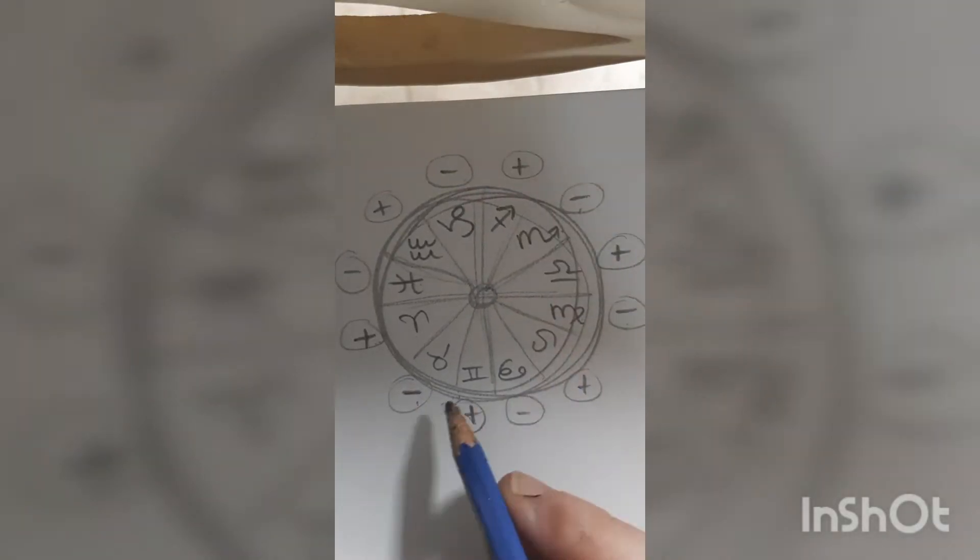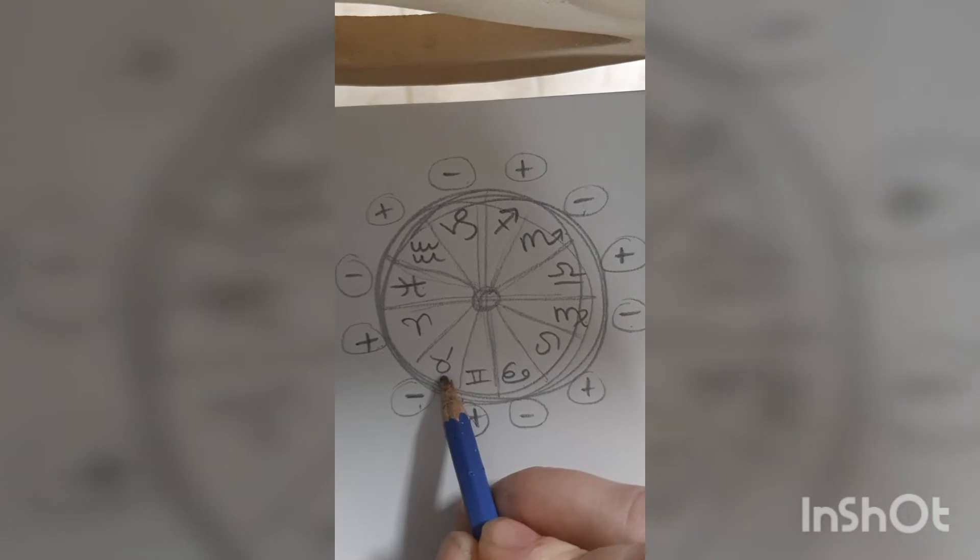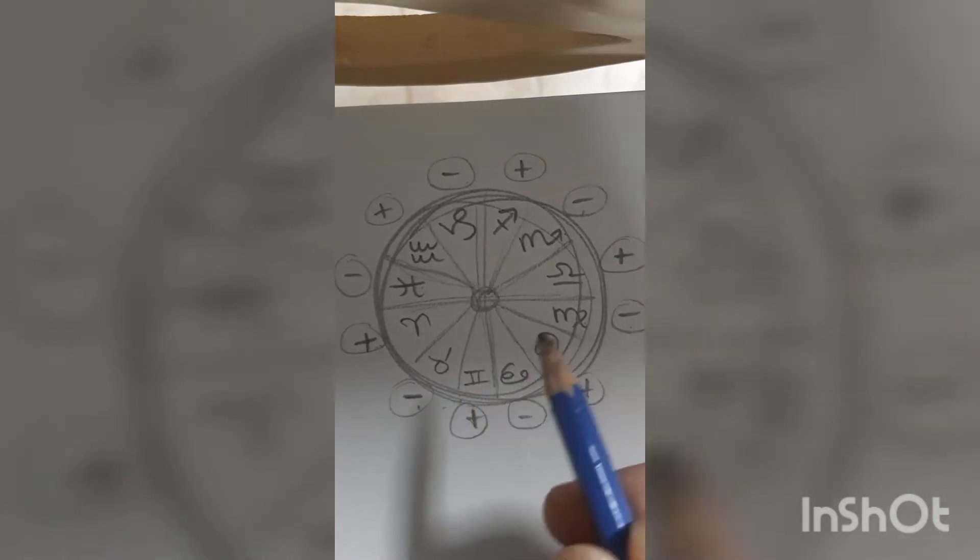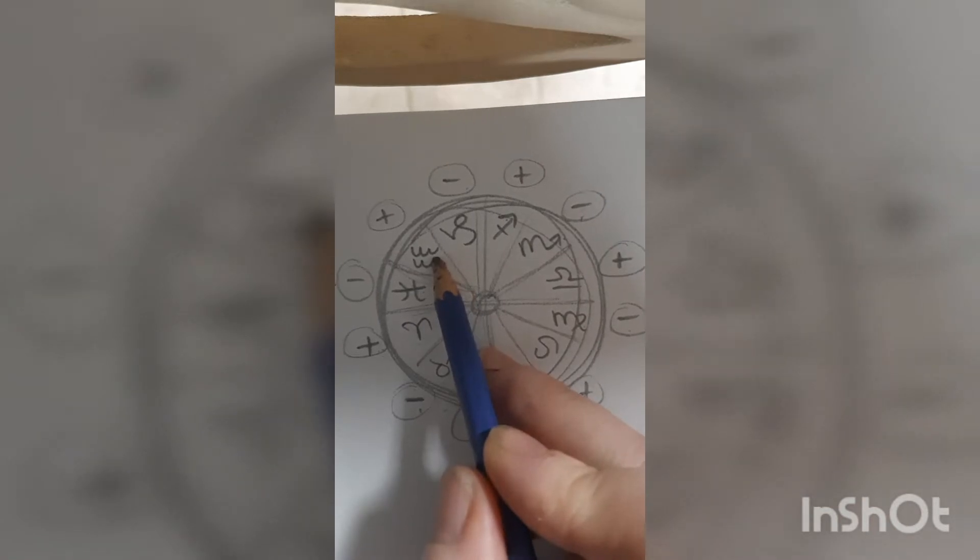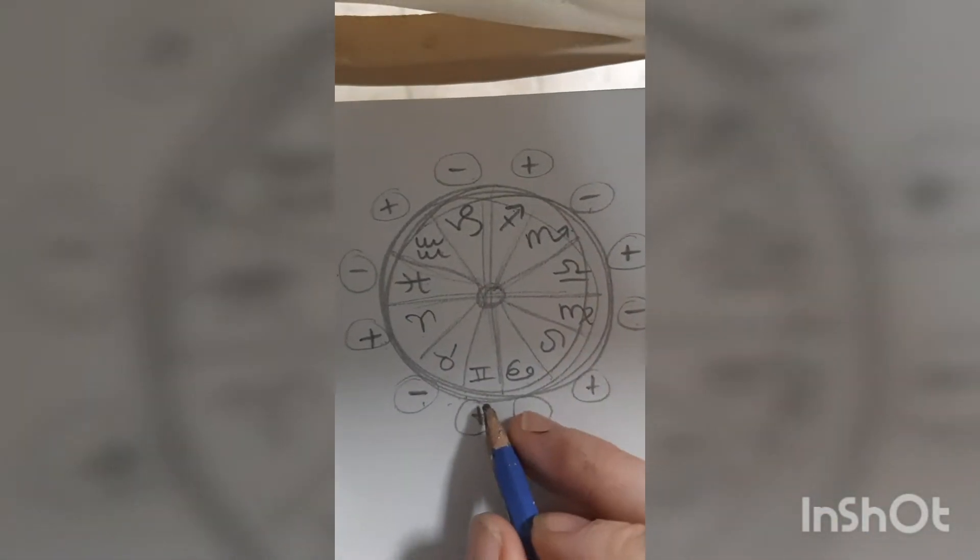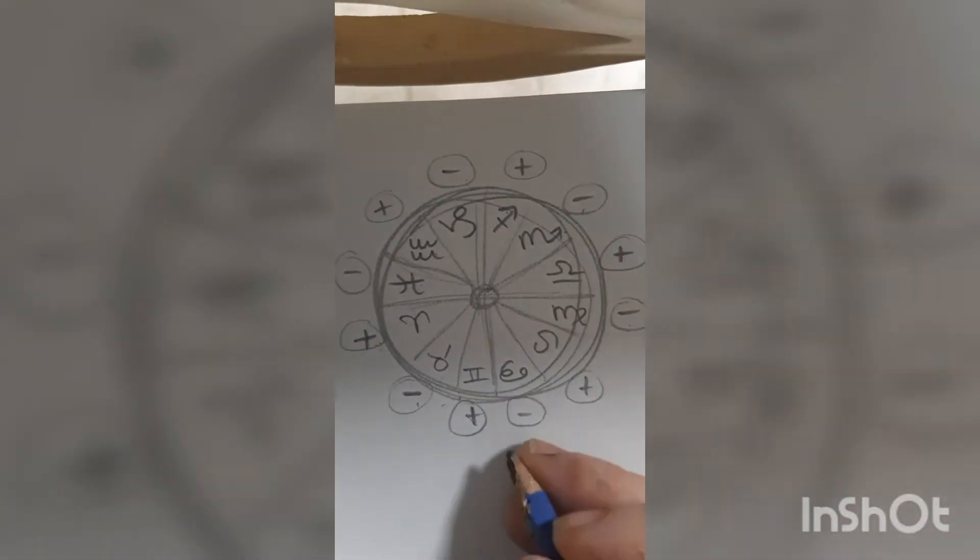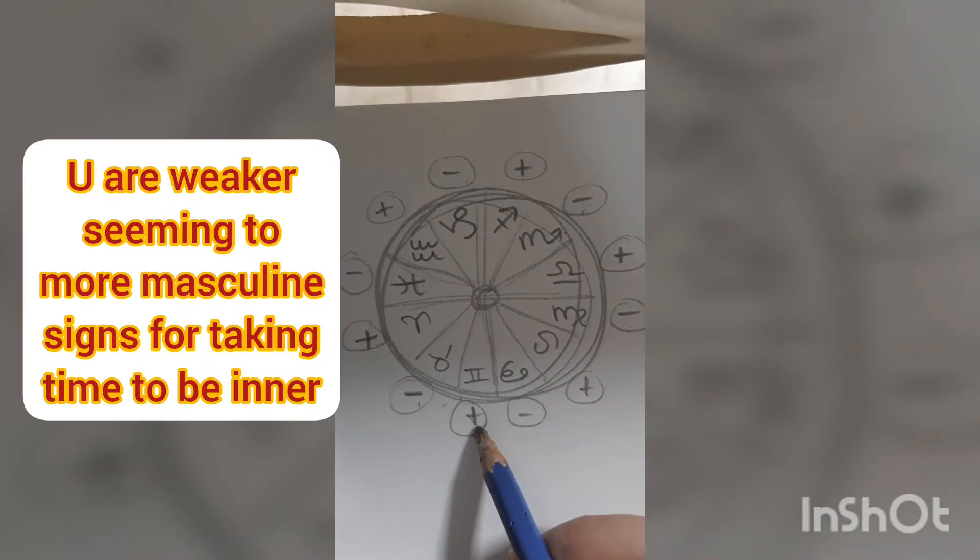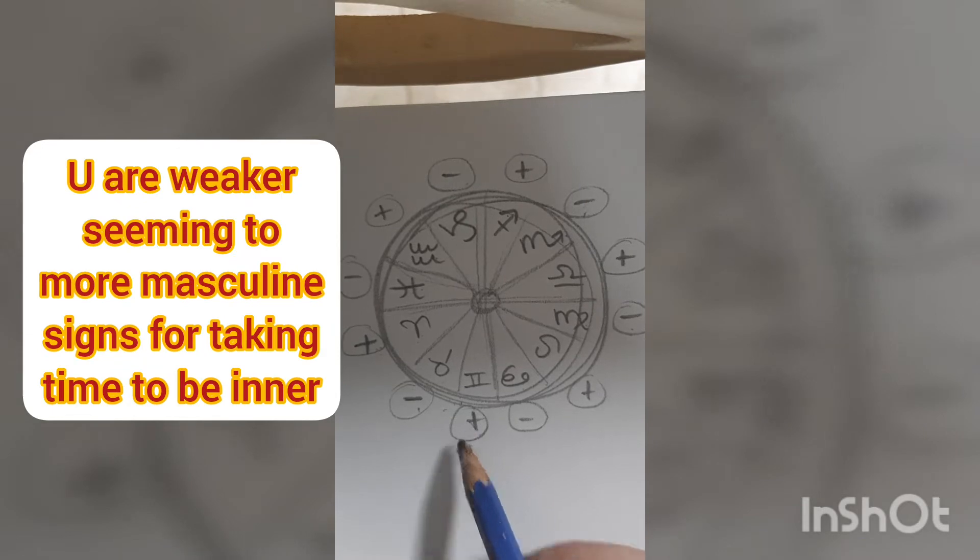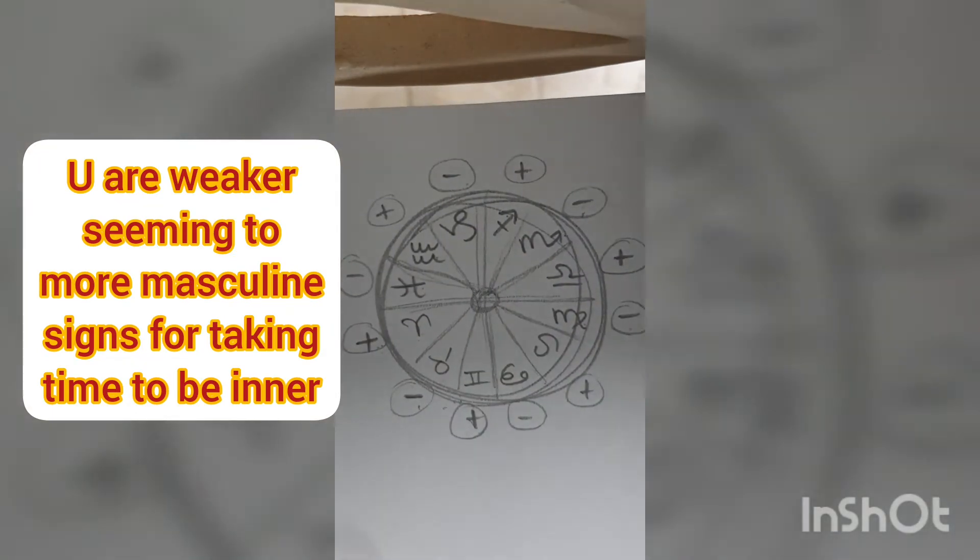So if you are a double negative, say you're a double Taurus man, then when you meet a double Sagittarius man or a double Aquarius man, they are going to feel like they have an edge over you, like you're somehow inferior to them. You're inner, you're not working on the outer, you're working on the inner. It's an opposition.